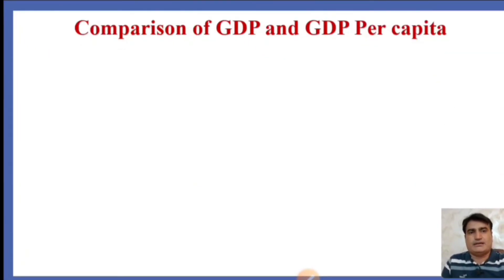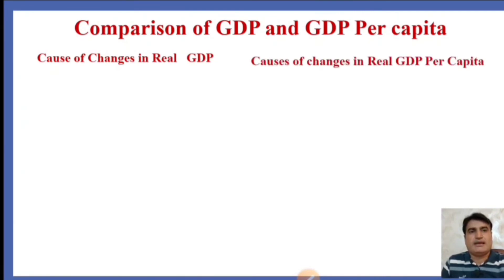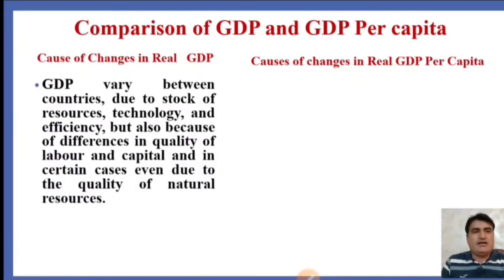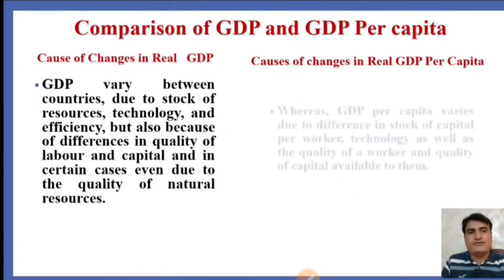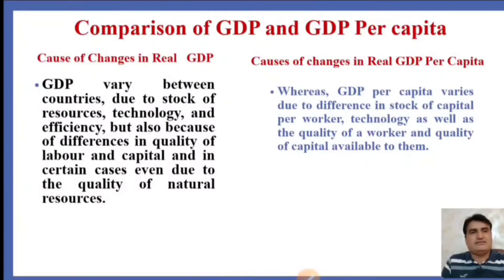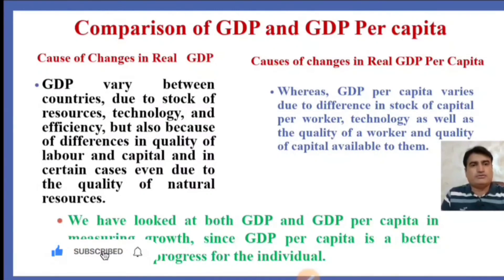Now we compare GDP and GDP per capita — which measure is better. GDP varies between countries due to stock of resources, technology and efficiency, but also because of differences in quality of labor and capital, and in certain cases even the quality of natural resources. Whereas GDP per capita varies due to differences in stock of capital per worker, technology, as well as the quality of workers and quality of capital available to them. GDP per capita is a better measure of progress for the individual.